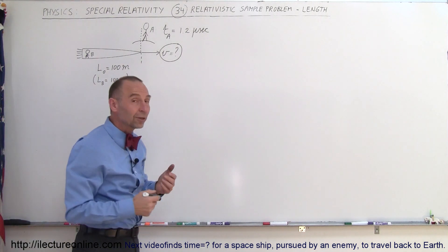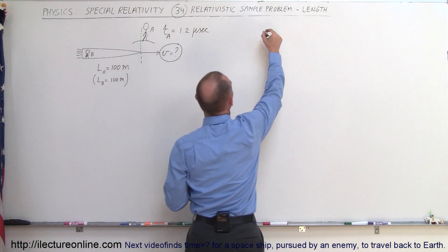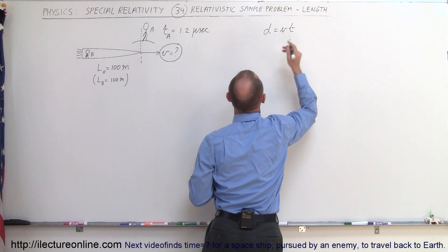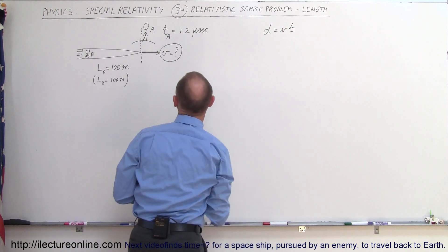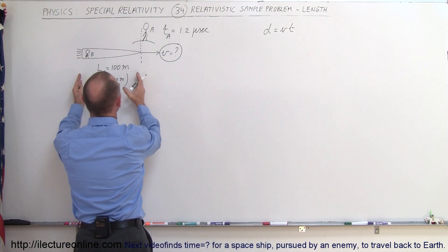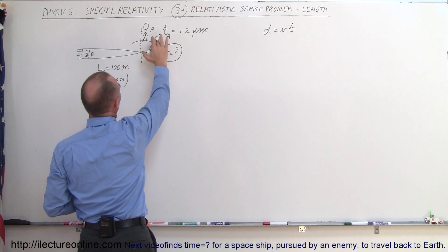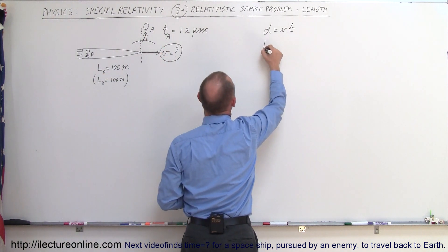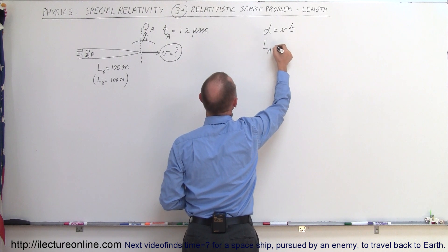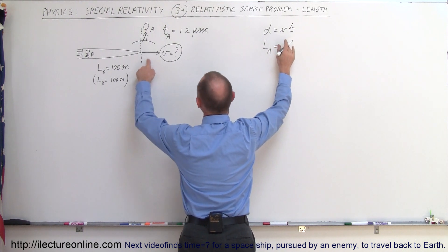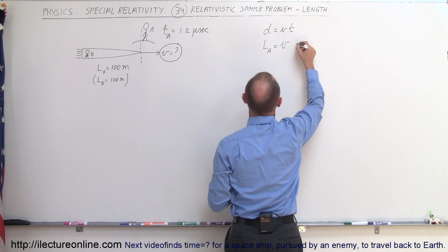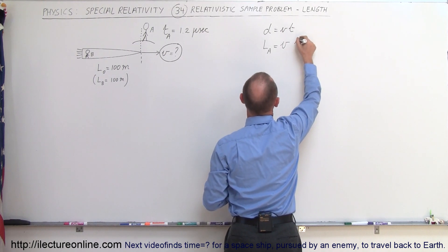We start with the basic premise that distance equals velocity times time. In this case, the distance that A is measuring — L as measured by A — is equal to the velocity of the spaceship V times the time measured by A. We use subscripts to make sure we know which time and which length we're dealing with.